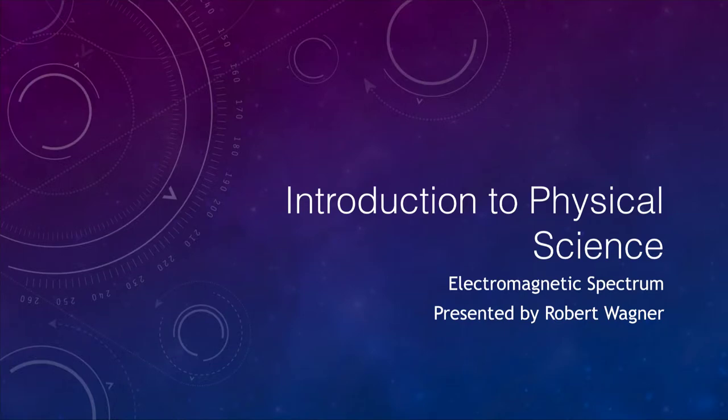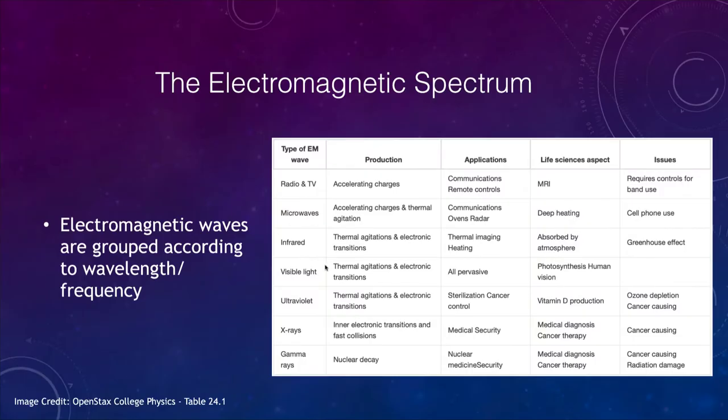Greetings and welcome to the Introduction to Physical Science. In this lecture, we are going to talk about the electromagnetic spectrum and what the different parts of that are. Visible light is one example of electromagnetic radiation and one part of the electromagnetic spectrum, but there is far more to it than visible light, as we shall see.